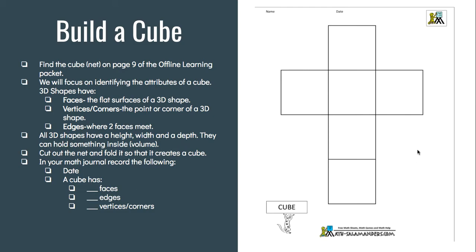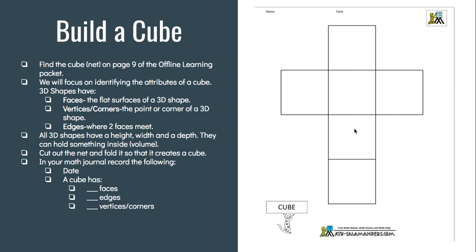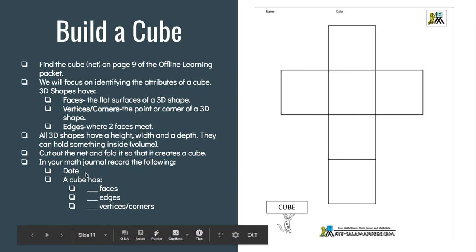What you're going to do is cut this out — cut the outline only, you're not cutting any of the lines in the middle. Then you're going to fold it and tape it together to create a cube. Then in your math journal you're going to record the following. I also have a little Google Classroom assignment where you're going to tell me how many faces, edges, and vertices a cube has.